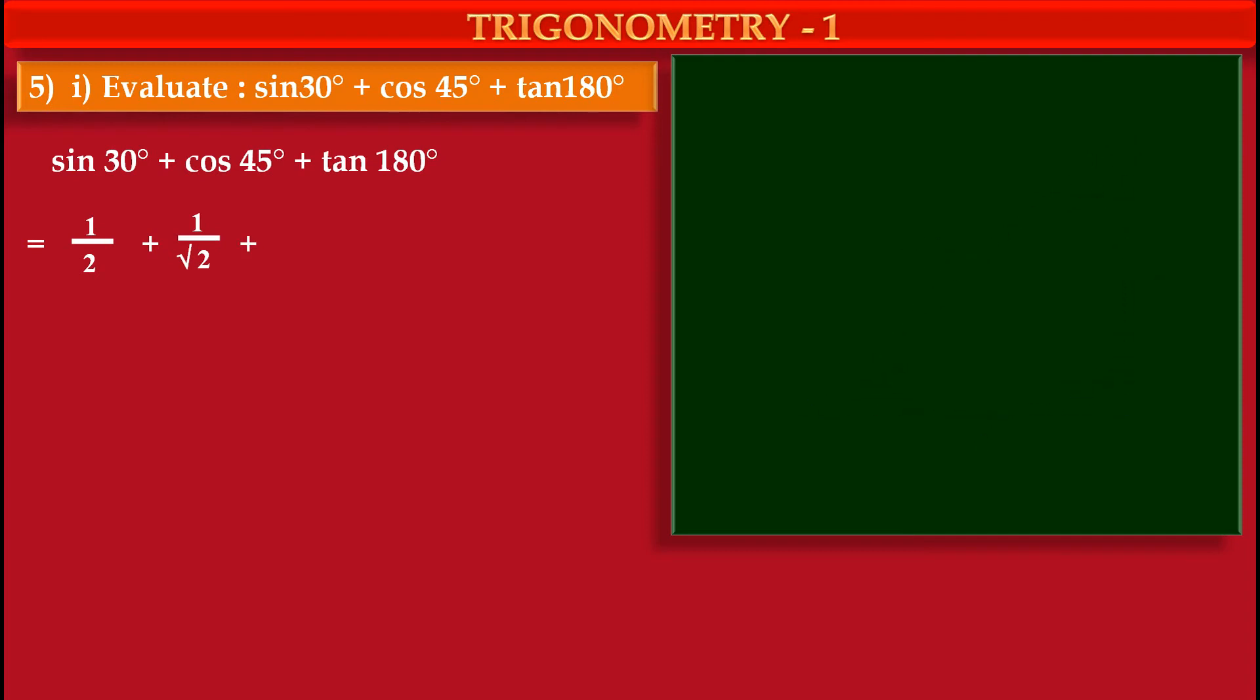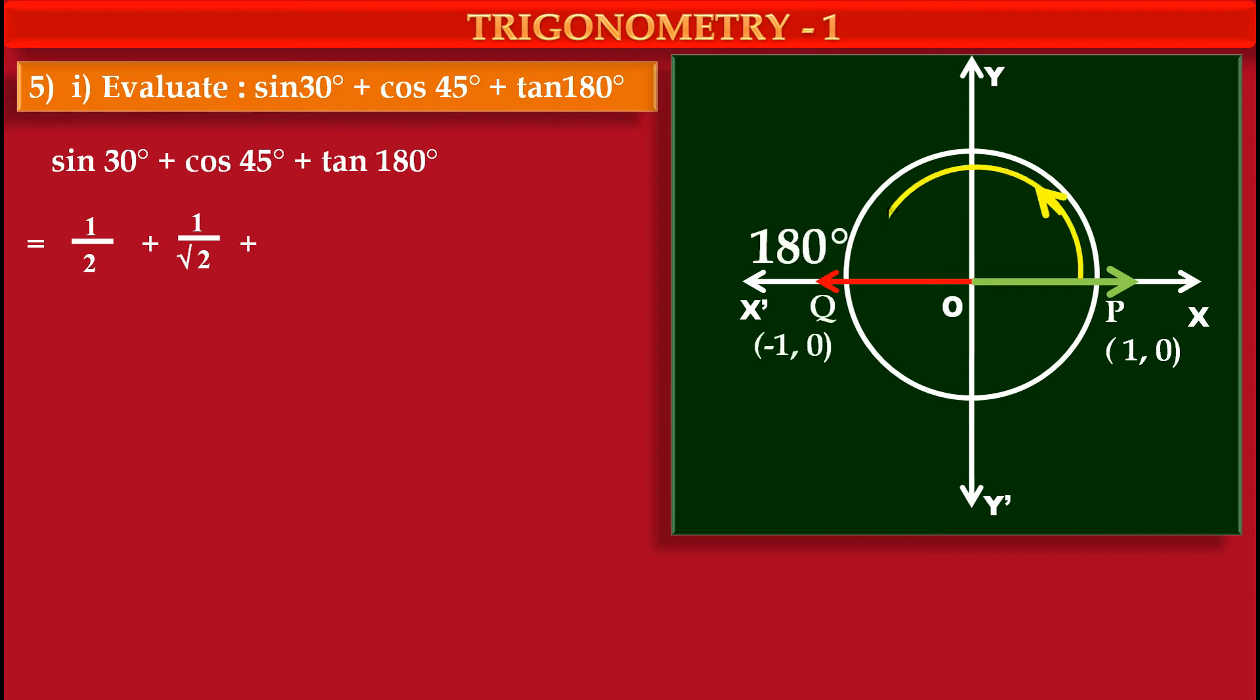Now we have to find value of tan 180°, tangent of 180°. So we have to draw a standard unit circle in our coordinate system. Now we have measured 180° angle. See this yellow arc. 180° lies on negative direction of x-axis. It intersects our circle at one point Q having coordinates minus 1 comma 0.